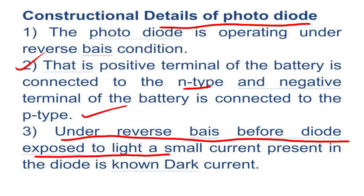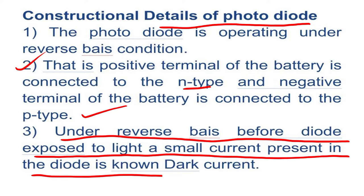Under reverse bias, before the diode is exposed to light, a small current is present in the diode known as dark current. Before exposing the photodiode to light, a small amount of current is present — that small amount of current is nothing but the dark current.